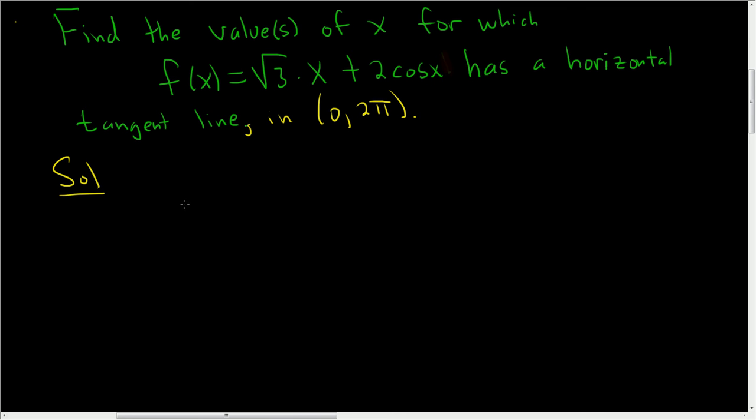To find the values of x for which the function has a horizontal tangent line, we have to think, right? What is a derivative? A derivative is a slope.